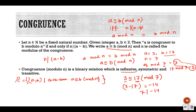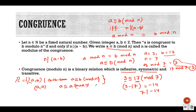Let's think about whether this relation is reflexive, symmetric, or transitive. For reflexive, we consider whether a is congruent to a with some modulo n. This is true because n divides a minus a, and a minus a equals 0. Since n divides 0, the relation is reflexive.